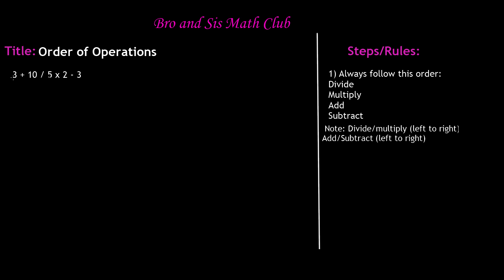So this problem is 3 + 10 ÷ 5 × 2 - 3. And yes, it is long, but it's really simple as long as you use this order, okay? So first is division or multiplication from left to right.